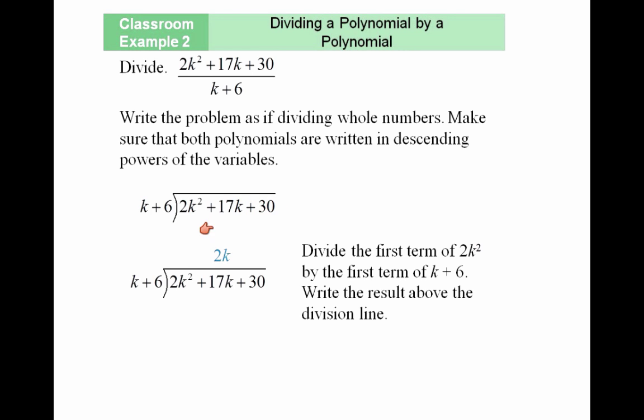The highest exponent comes first, all the way down to the constant. The next step is to ask yourself: what times k gives you 2k²? The answer is 2k. So divide the first term of 2k² by the first term of k+6. Write the result above the division line. K times k gives k², and then we need the coefficient 2, giving us 2k.